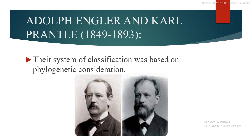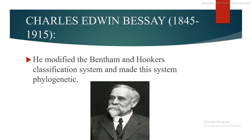Next is Adolf Engler and Karl Prantl, the time period was 1849–1893. Their system of classification was based on phylogenetic consideration. Next is Charles Edwin Bessey, 1845–1915. He modified the Bentham and Hooker classification system and made it phylogenetic.